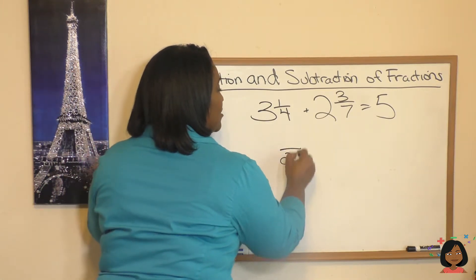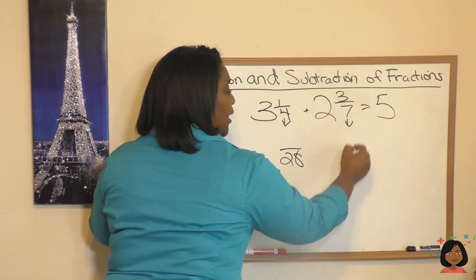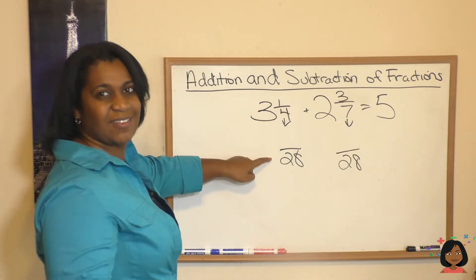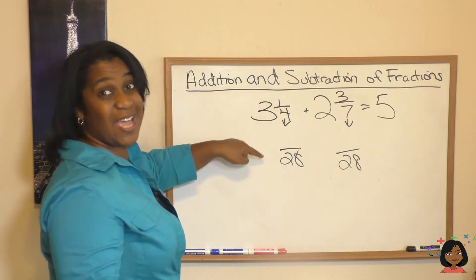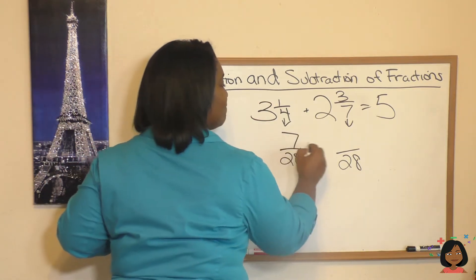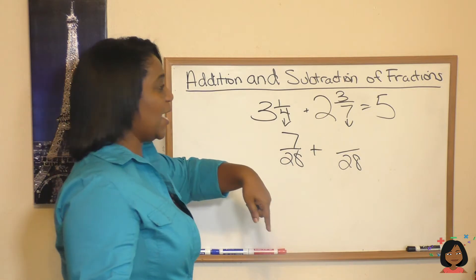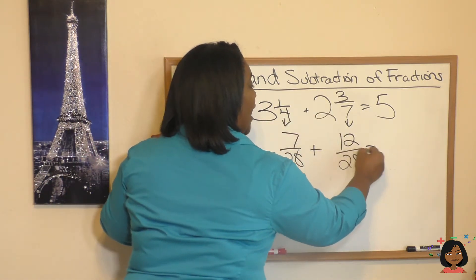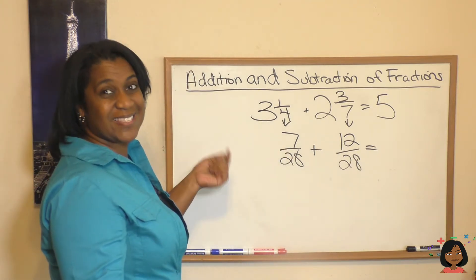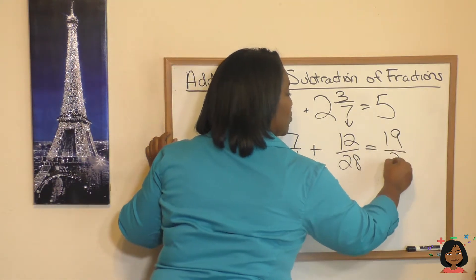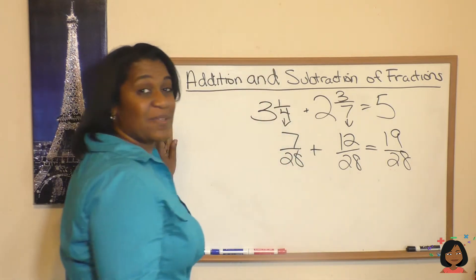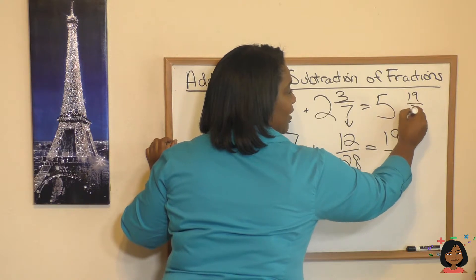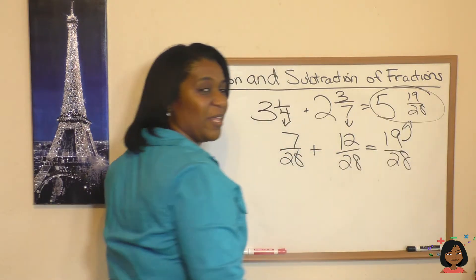So we're going to bring both of these over 28. 4 times 7 is 28. So 1 times 7 is 7. 7 times 4 is 28. So 3 times 4 is 12. And now we can add 12 and 7 is 19 over 28. That cannot be simplified. So our answer is going to be 5 and 19 twenty-eighths.